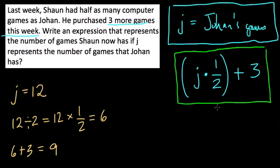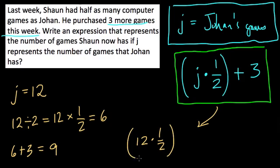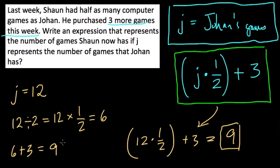Does this equation give us the right number of games? Let's plug it in. J is 12 — 12 times a half, and then add 3 to that. Well, that's 6 plus 3, and that's 9. So this equation does work. It gives us the right number of games for at least that situation, and it certainly would for any other. All right, thanks.